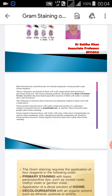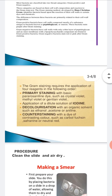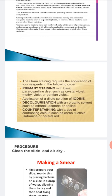Today we are going to do a practical to identify gram positive and gram negative bacteria. For this, our requirements are: first, a primary staining solution — crystal violet. Second, a mordant — iodine. Third, a decolorizing agent — alcohol, here we are using 95% ethanol. Fourth, a counter stain — safranin.